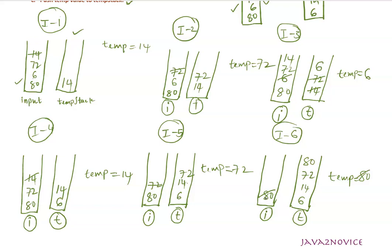Now the input stack is empty and we are done with our iterations. If you look at the temporary stack, the elements are already in ascending order. This is how we can implement sorting using a temporary stack. Now let's write the code.